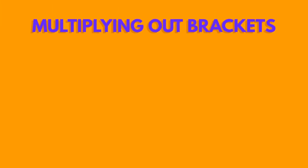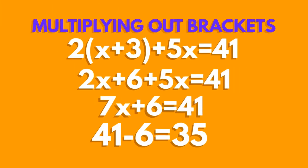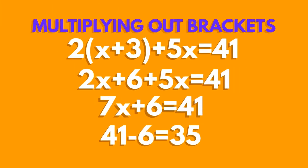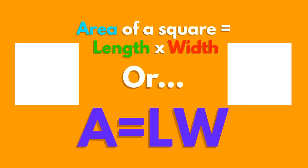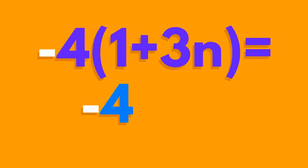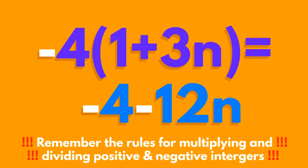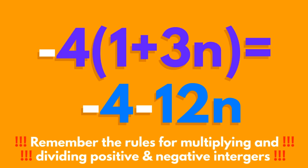Now let's try multiplying out brackets. The thing outside the brackets multiplies each separate term inside the brackets. When letters are multiplied together, they are just written next to each other like this. A minus outside of the brackets reverses all the signs when you multiply.